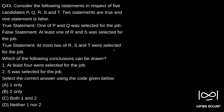Which of the following conclusions can be drawn? One: at least four were selected for the job. Two: S was selected for the job. So let's analyze the statements. There are three statements given — two are true, one is false. The first statement is a true statement which says one of P and Q was selected for the job. That means either P was selected or Q was selected, not both.